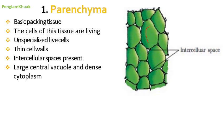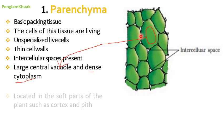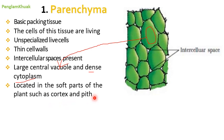The vacuoles are very large and present at the center of the cells. Parenchyma cells also have dense cytoplasm, meaning the food substances present within the cells are densely packed. These cells are located in the soft parts of the plant such as the cortex and pith.